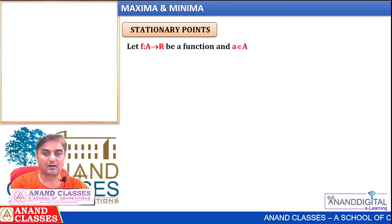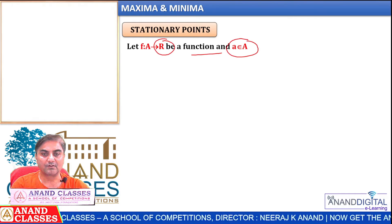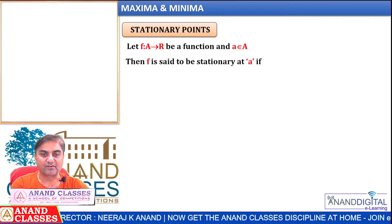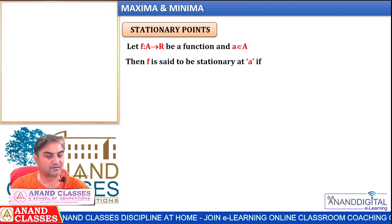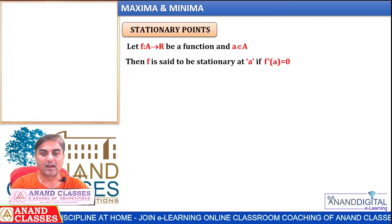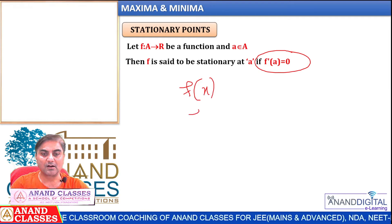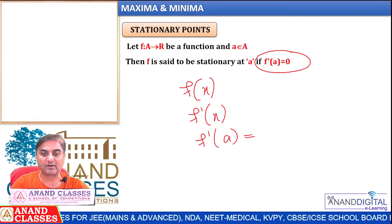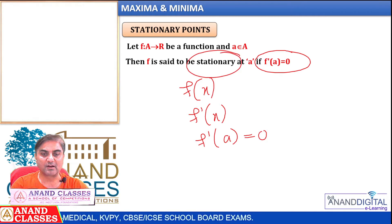Stationary points: Let f be a function defined on a set of real values. Let small a belong to set A. f is said to be stationary at point a if f′(a) = 0. This means: given f(x), we find its derivative, and if at point a the derivative equals 0, then that point is a stationary point and the function is stationary there.